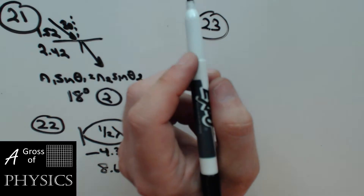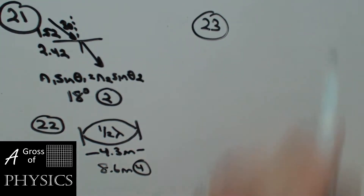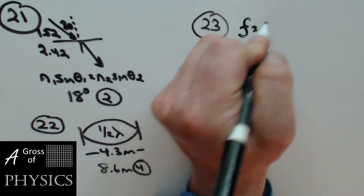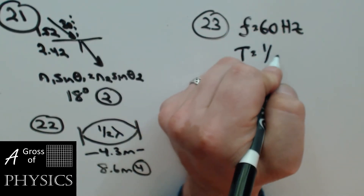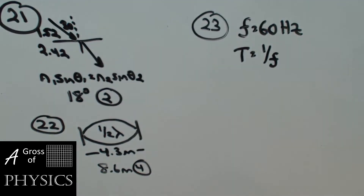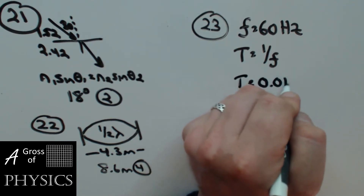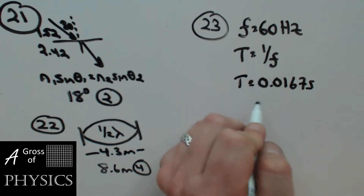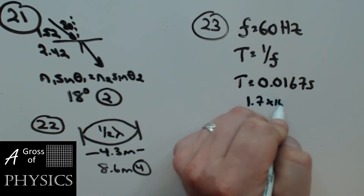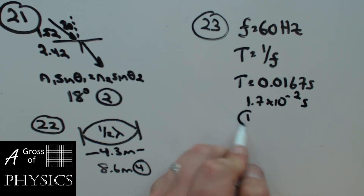Number 23: what's the period of a periodic wave that has a frequency of 60 hertz? The frequency is 60, and T equals 1 over F. So 60 to the negative 1 gives 0.0167 seconds, or in scientific notation, 1.7 times 10 to the negative 2 seconds. Choice one.